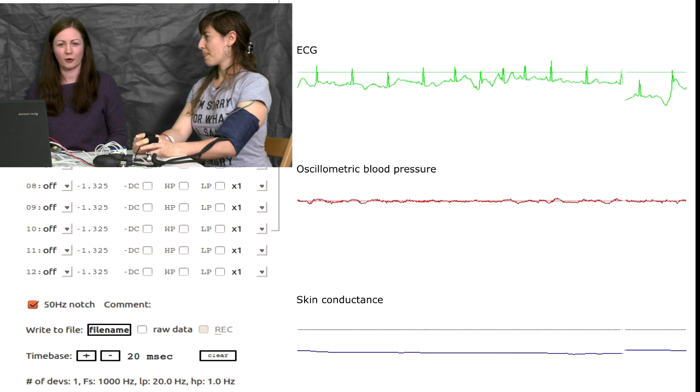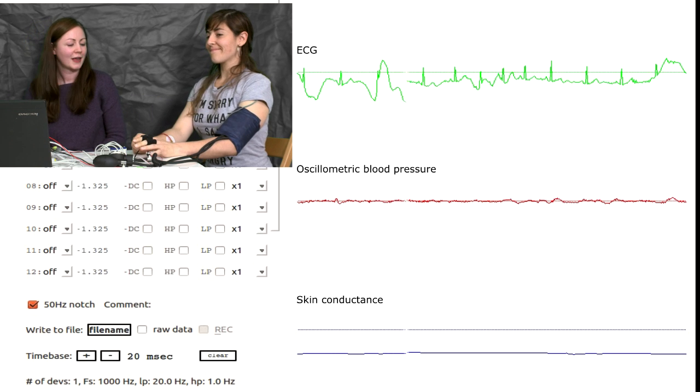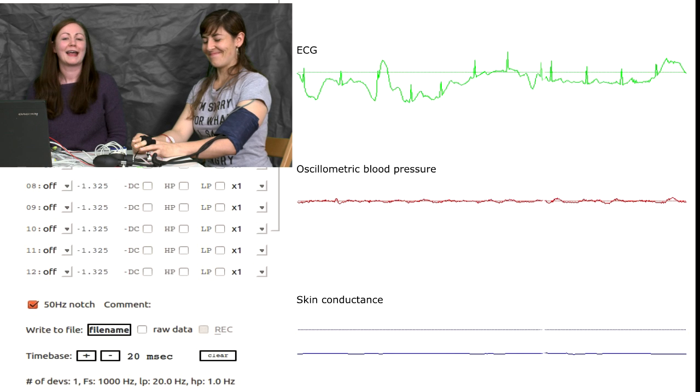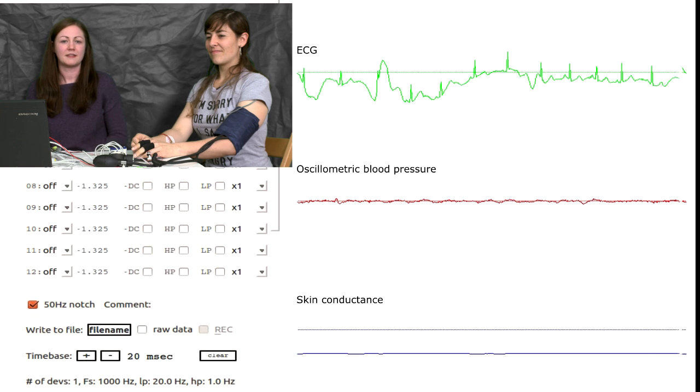So some of the ones we've got, we've got oscillometric blood pressure using a blood pressure cuff on your arm. So we should see fluctuations in your blood pressure as you lie. And then we've got ECG, which we're measuring with our ECG amplifier.